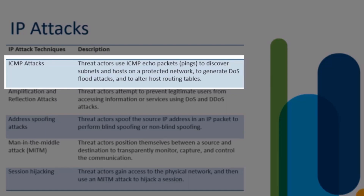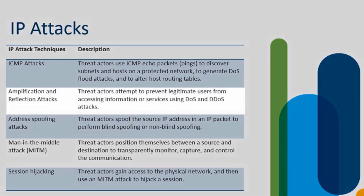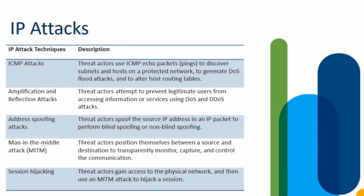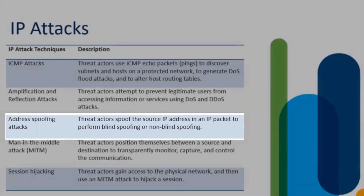Threat actors can even use ICMP attacks to alter the host routing tables of a targeted device. With amplification and reflection attacks, threat actors prevent legitimate users from gaining access to information or network services by using denial of service and distributed denial of service attacks. With spoofing attacks, a threat actor can spoof the source IP on a packet — this can be blind spoofing or non-blind spoofing.